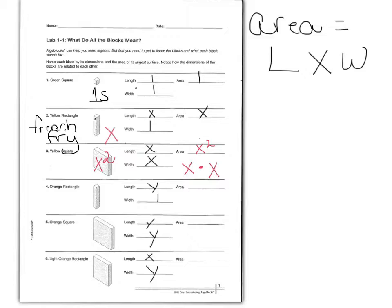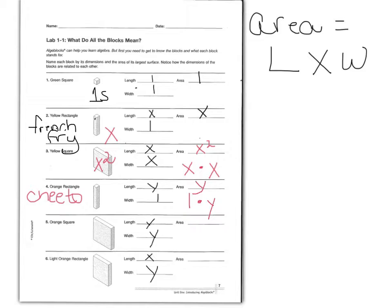Get out your orange rectangle. This one I like to think of as a cheeto because it looks like a cheeto. Our cheeto has a width of 1 unit, like the green cube. The length we do not know, so we need a variable name — we're going to call it y. The area is 1 times y, which is simply y. So from now on, cheeto will be called y. Next is our orange square. It has a length of y and a width of y, so y times y gives us y squared. Our orange square will always be called y squared.